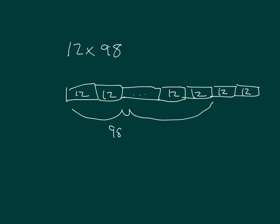There's 98 times 12. So 98 times 100 is 2 more 12s than 98 times 12.